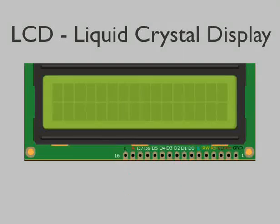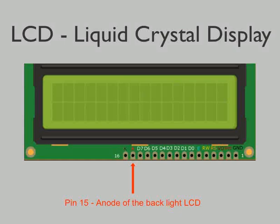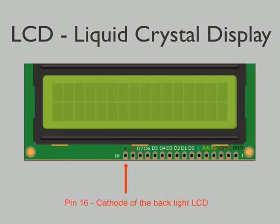These are LCD backlight pins, used to power the LCD, control the display contrast, and turn on or off the LCD backlight. Pin 15 is the anode of the backlight LCD, and pin 16 is the cathode of the backlight LCD.